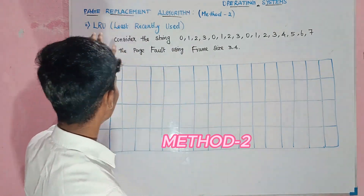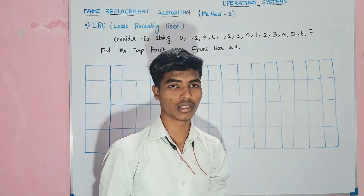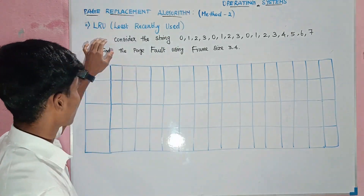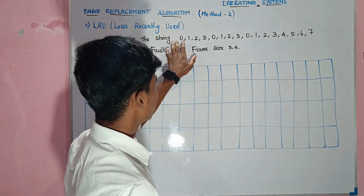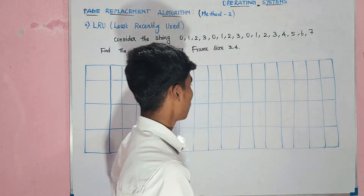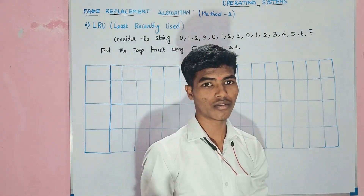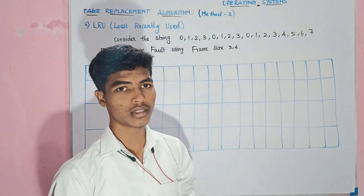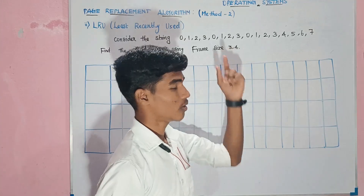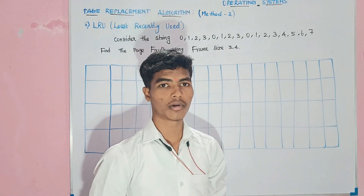The second method is LRU - Least Recently Used. The question is: given the reference string 0 1 2 3 0 1 2 3 0 1 2 3 4 5 6, find the page fault using frame size 3 and 4. We will find the page fault using frame size 3 and 4, covering the full truth table.